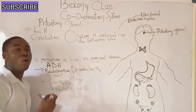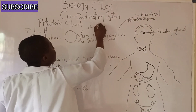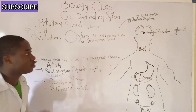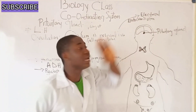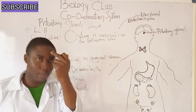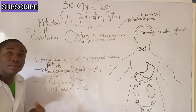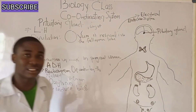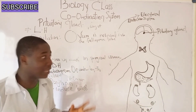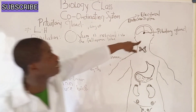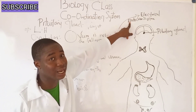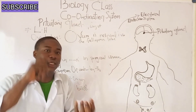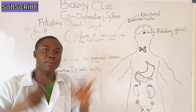It must be noted that the ovum is the largest single cell of the body. This concludes our discussion on the pituitary gland, which is found at the base of the forebrain and is called the master gland because its secretion influences the activities of other glands. If you liked this video, please hit the subscribe button and share with your friends.